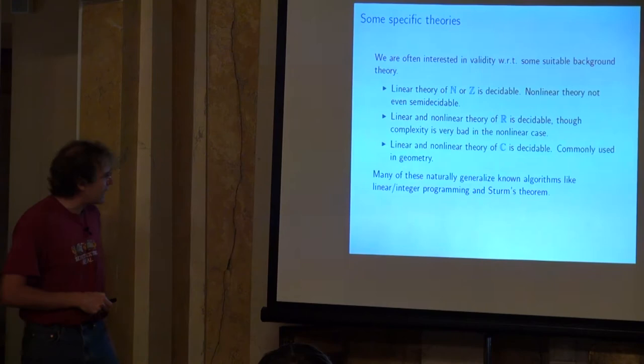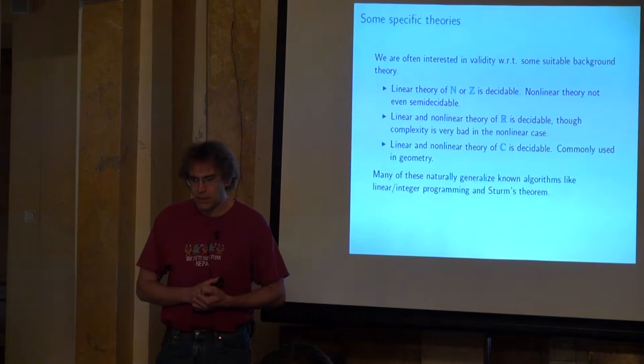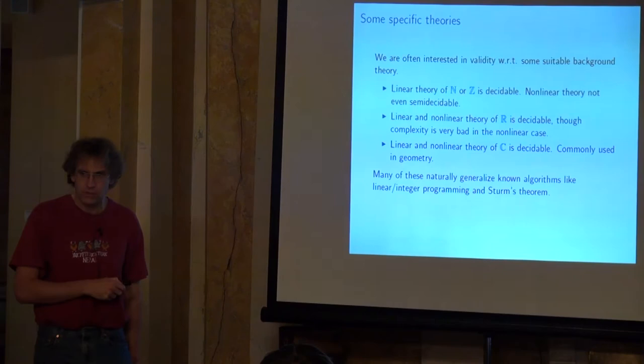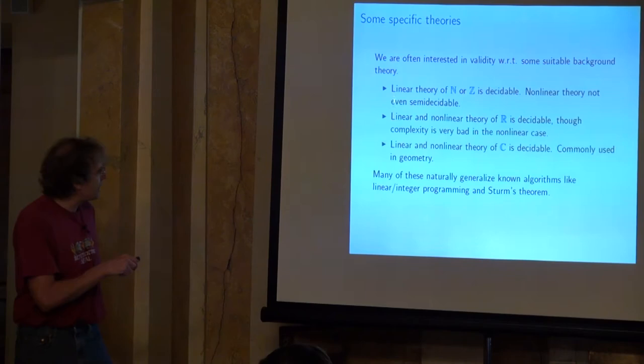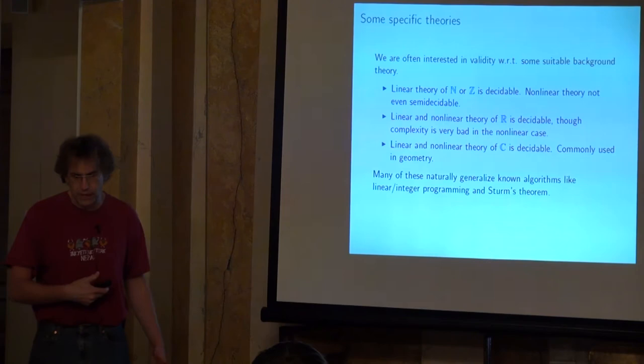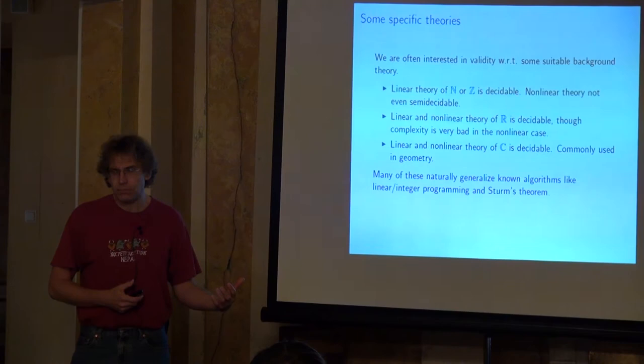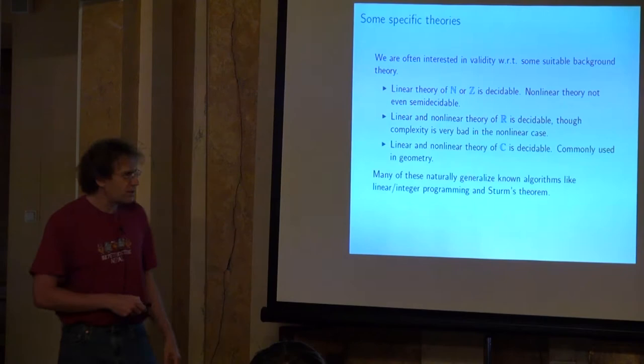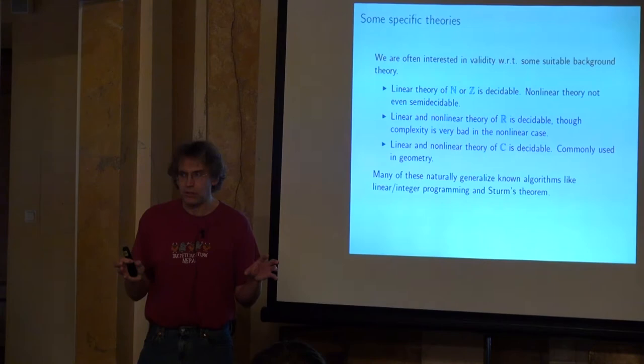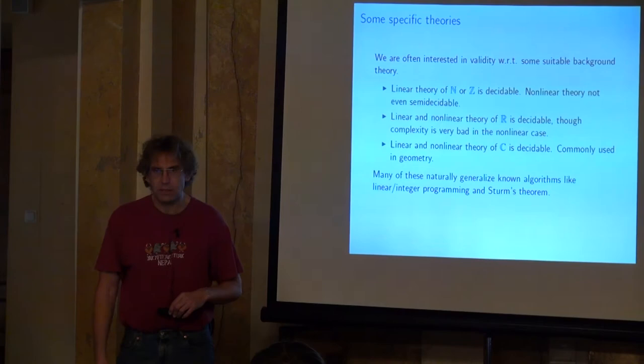For the complex numbers, both the linear and non-linear theories are decidable, and although there are some discouraging complexity bounds, this seems to be much more effective in practice. There are algorithms like Gröbner bases that can yield quite efficient proofs in this area. Very often these logical decision problems are just generalizations of known algorithms, like linear and integer programming, or Sturm's theorem for counting polynomial roots in an interval.